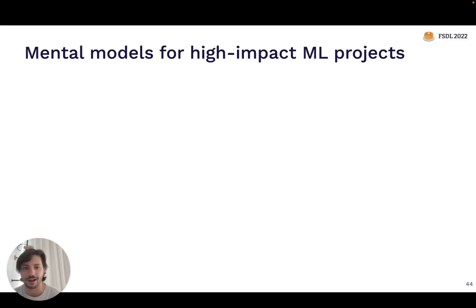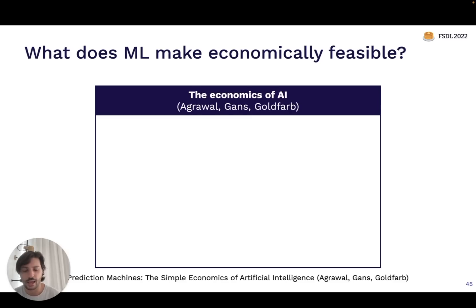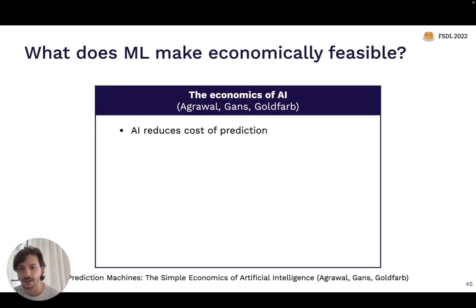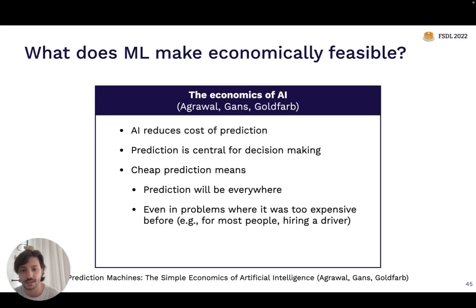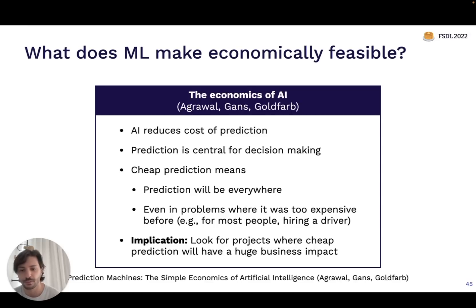What are some mental models for finding high impact ML projects? Starting with a book called 'The Economics of AI': what problems does machine learning make economically feasible to solve that weren't feasible before? The core observation is that at a fundamental level, what AI does is reduce the cost of prediction. Before, you might need a person taking five minutes to create a prediction — very expensive and operationally complex. AI can do that in a fraction of a second. Cheap prediction means predictions happening in more places, even where it was too expensive before. Think about projects where cheap prediction will have a huge business impact.